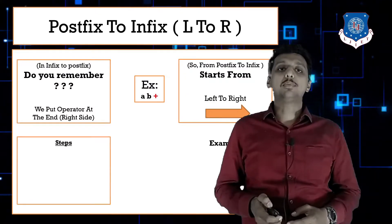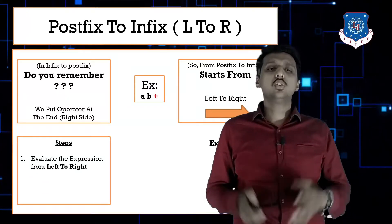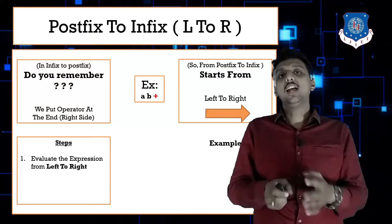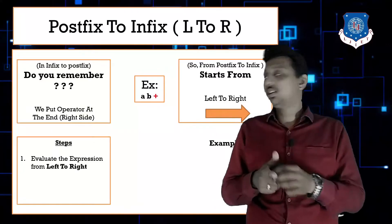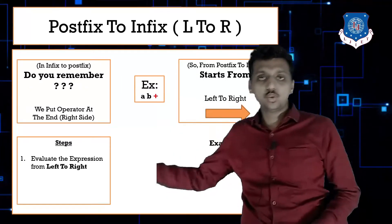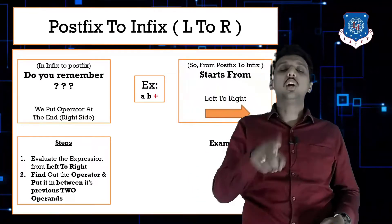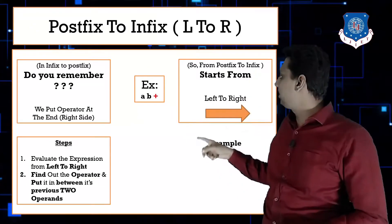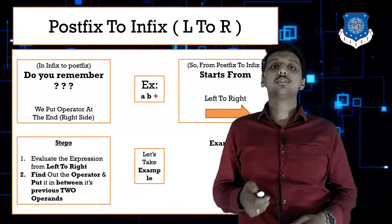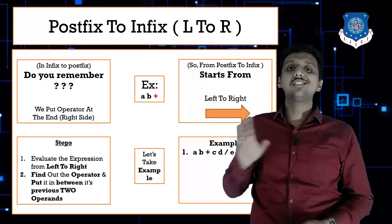The steps to convert a postfix expression to infix are straightforward. First, traverse the entire expression from left to right. Whenever you find an operator, place that operator in between its previous two operands. Let's see the first example: ab+cd/e*-